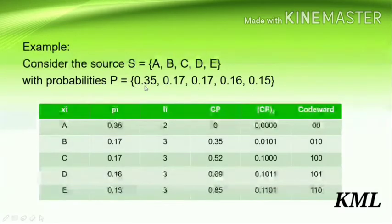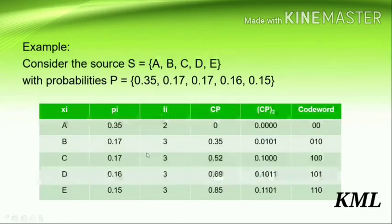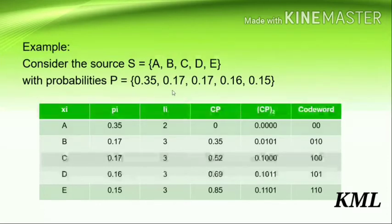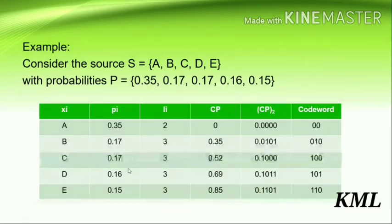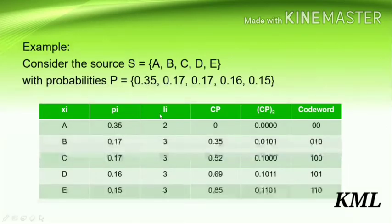The first step is to order the probabilities in decreasing order. Here they are already sorted, so write them as is: 0.35, 0.17, 0.17, 0.16, and 0.15. Remember, if two probabilities are equal, take preference from left to right — the first one from the left comes first, then the second.